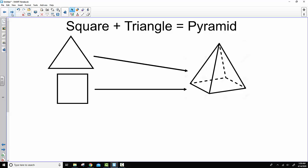A square can also form the base of a pyramid. The square is then attached to four triangles, and a pyramid is formed.